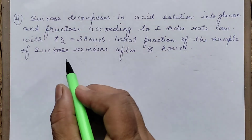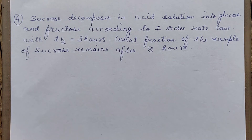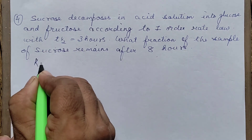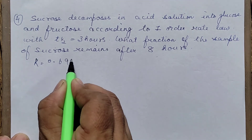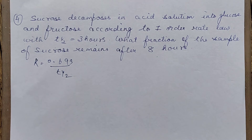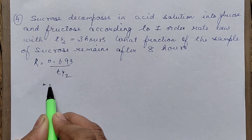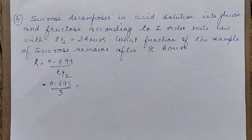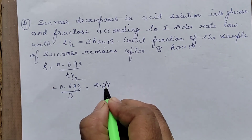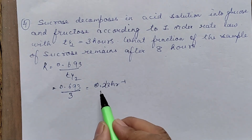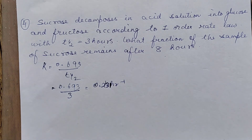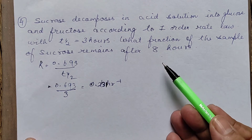Next question: sucrose decomposes in acid solution into glucose and fructose according to first order kinetics. T½ = 3 hours. Calculate the fraction of sucrose remaining after 8 hours. First calculate K: K = 0.693/T½ = 0.693/3 = 0.231 per hour.